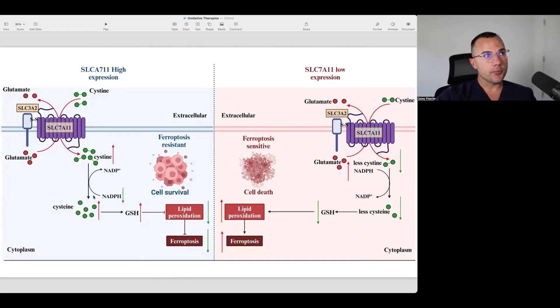For example, when the amount of SLC-7A11 or XC is abundant, and we have abundant glutamine and cysteine, the amount of glutathione is increased. What that does is it acts as an antioxidant and blocks lipid peroxidation or oxidation of fats. So what happens is that puts these cancer cells in a ferroptosis resistant state. Basically, this means the internal shield system of the cancer is up.